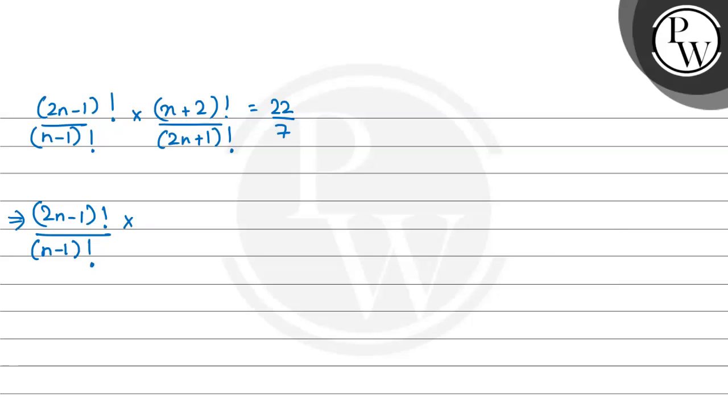I will change n plus 2. So n plus 2 factorial can be written as n plus 2, n plus 1, n multiplied by n minus 1 factorial upon 2n plus 1 factorial can be written as 2n plus 1 multiplied by 2n multiplied by 2n minus 1 factorial. Now, let us see what cancels. 2n minus 1 factorial with 2n minus 1 factorial cancels. n minus 1 factorial with n minus 1 factorial cancels.